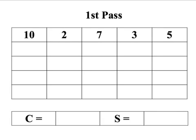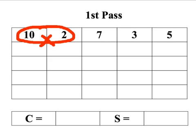So if we get stuck in and apply the algorithm, we can do the first pass on the list of numbers: 10, 2, 7, 3, 5. The first pass is pretty straightforward, because all we do is compare the first and second numbers in the list, which is 10 and 2. Ten is bigger than two, so we swap them over — I'll just do the cross to show that they're swapping places. So the 2 goes there, 10 goes there.